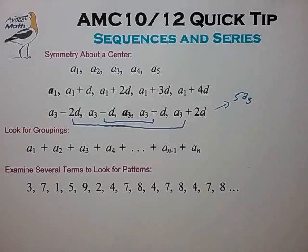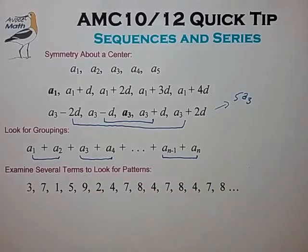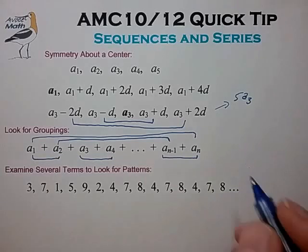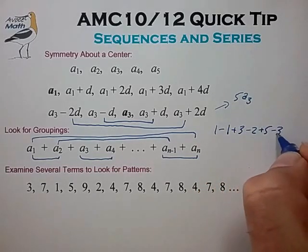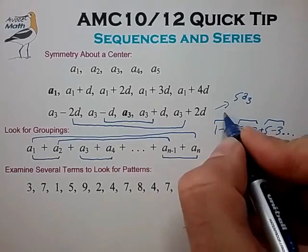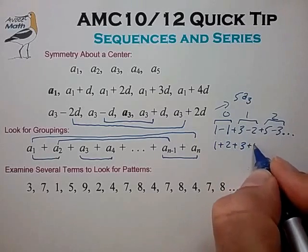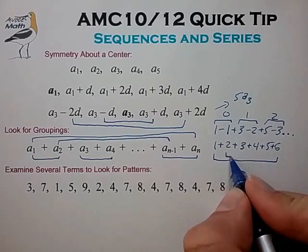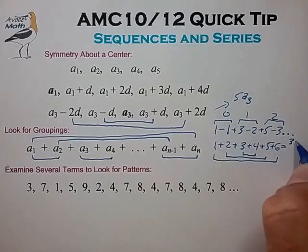A second tip is to look for groupings in the series. The most common groupings are pairwise groupings and front-to-back groupings. For example, the series 1 minus 1 plus 3 minus 2 plus 5 minus 3 is difficult to work with until we group the terms in pairs to reveal an obvious pattern. Another example is the series 1 plus 2 plus 3 plus 4 plus 5 plus 6. This is most easily handled with front-to-back groupings, at which point we realize we have three pairs of 7, so the sum is simply 3 times 7, or 21.